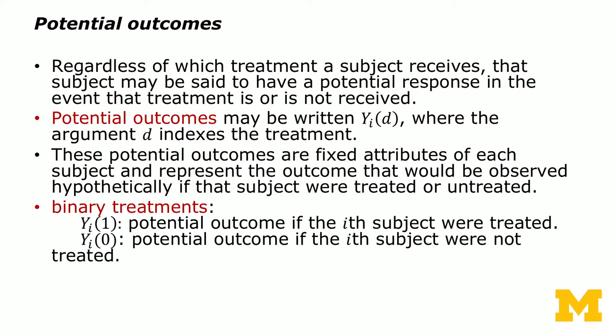We'll now discuss the potential outcomes framework and why randomization is important. Regardless of which treatment a subject receives, the subject is said to have a potential response in the event that the treatment is or is not received. Potential outcomes may be written as yi(d), where the argument d indexes the treatment. These potential outcomes are fixed attributes of each subject and represent the outcome that would be observed hypothetically if that subject were treated or untreated. In the binary treatment world, yi(1) is the potential outcome if the i-th subject were treated, whereas yi(0) measures the potential outcome if the subject is not treated.